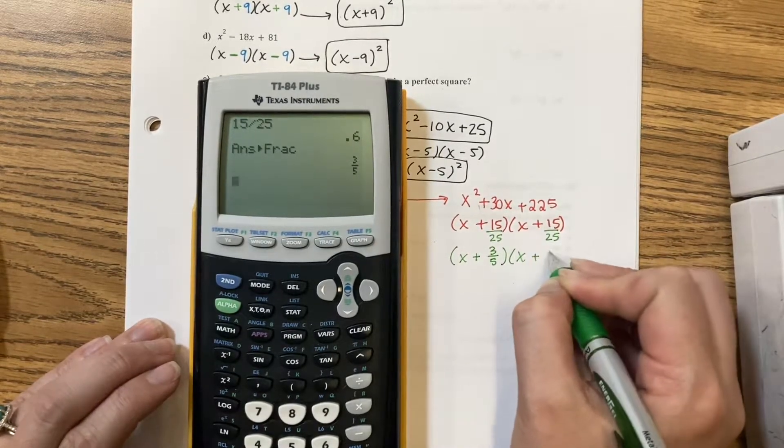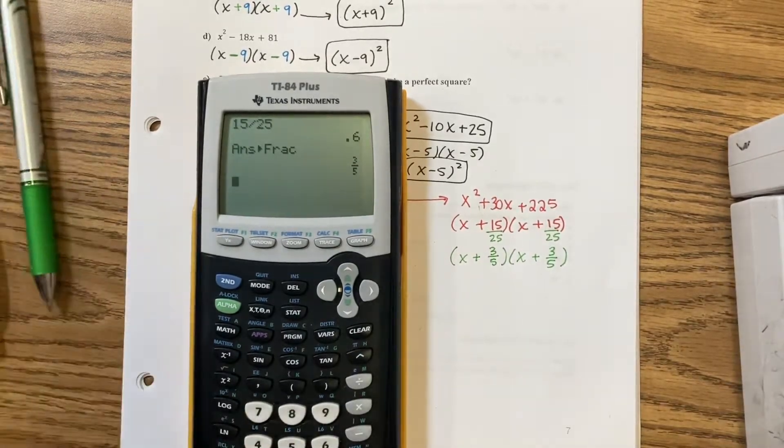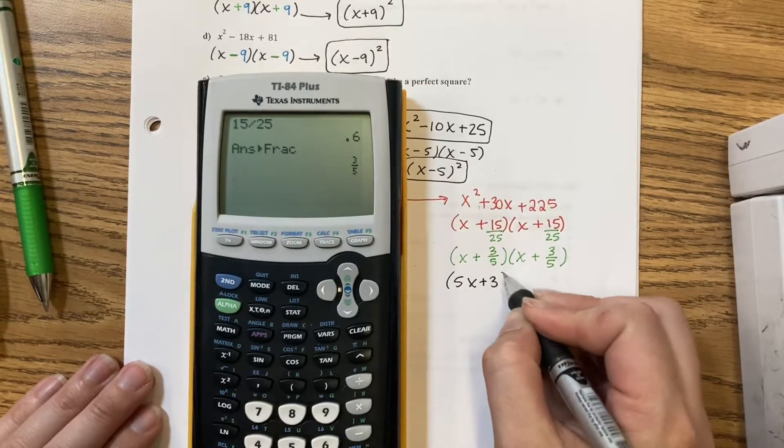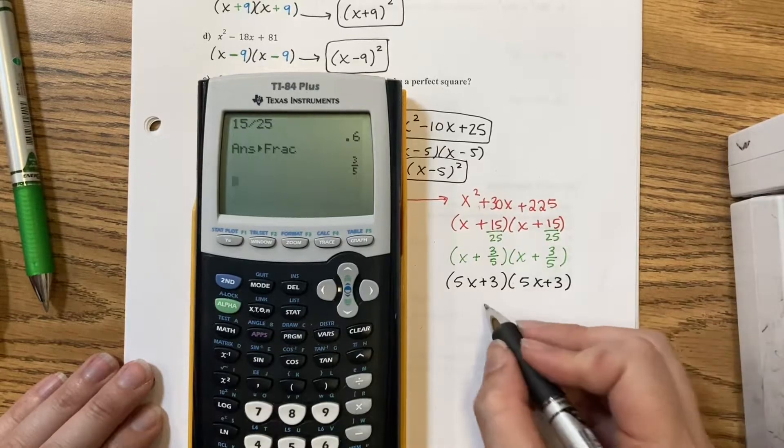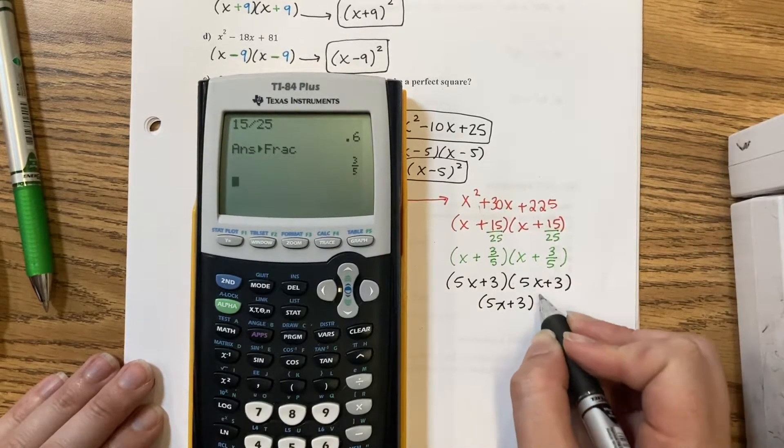It reduces to x plus 3 over 5. When I rewrite it, we get 5x plus 3, 5x plus 3, which is 5x plus 3 squared.